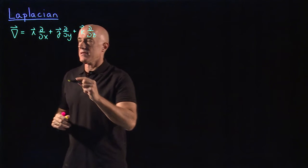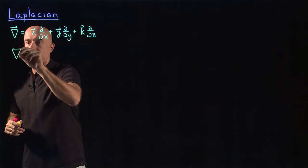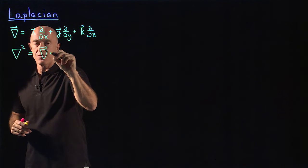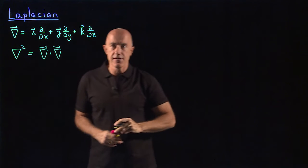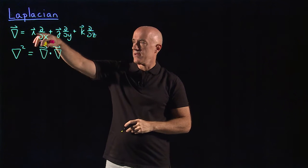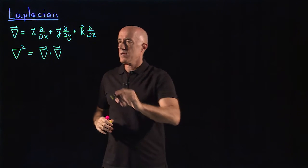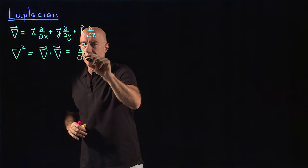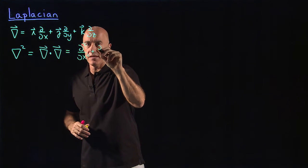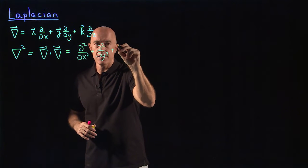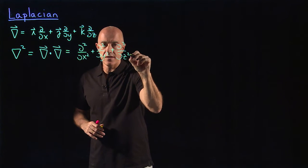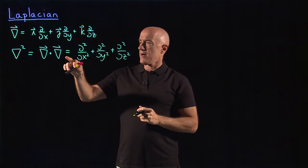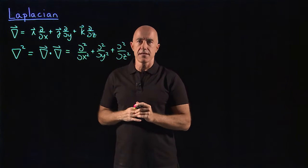The Laplacian is written as del squared, which comes from this differential operator dotted with itself. These unit vectors are orthonormal, so this is just the derivatives d squared dx squared plus d squared dy squared plus d squared dz squared. So the sum of the second partial derivatives. This is called the Laplacian operator.